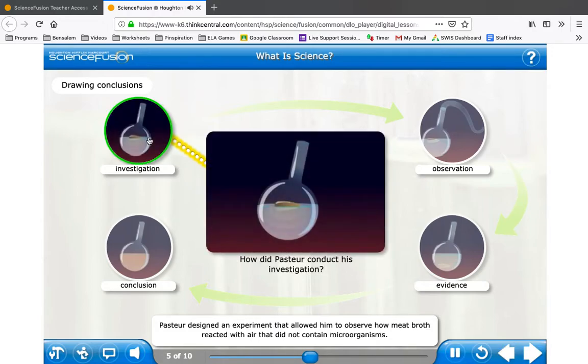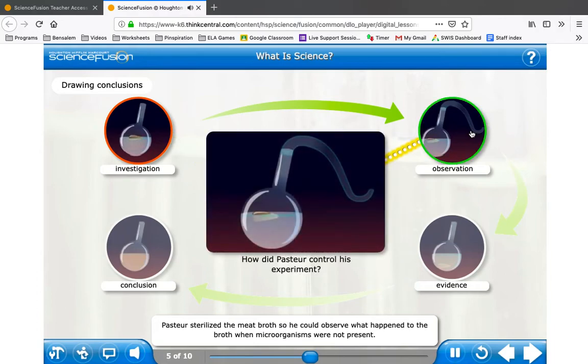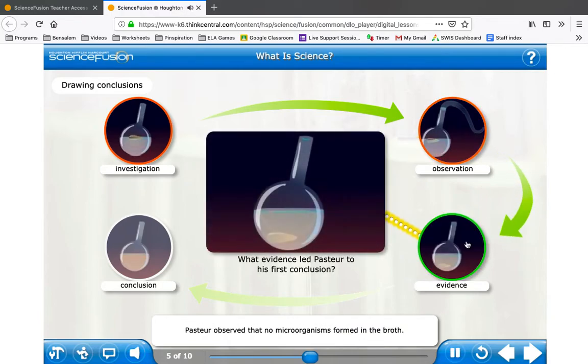Pasteur designed an experiment that allowed him to observe how meat broth reacted with air that did not contain microorganisms. Pasteur sterilized the meat broth so he could observe what happened to the broth when microorganisms were not present.